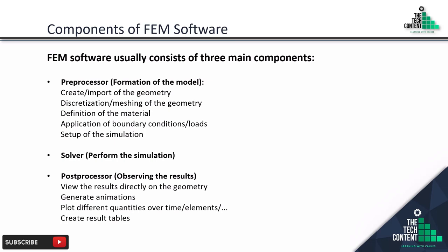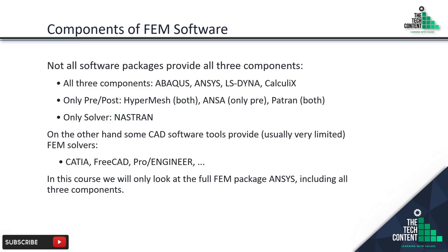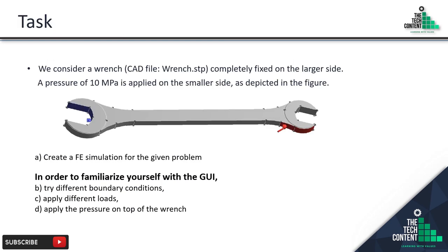Here is a list of FEM software: Abaqus, ANSYS, LS-DYNA, and CalculiX offer all three components - preprocessor, solver, and post-processor. HyperMesh provides only preprocessor and post-processor. ANSA provides only preprocessor. Patran provides both preprocessor and post-processor. NASTRAN is a solver only. Some CAD software also provides FEM solvers but usually very limited - such as CATIA, FreeCAD, Pro/E or Creo. In this course we will use ANSYS, which includes all three components.